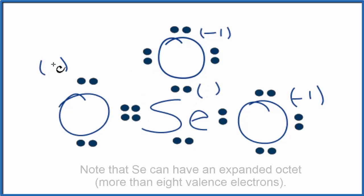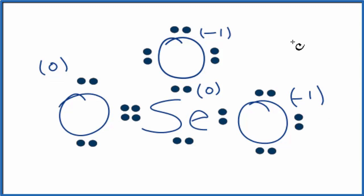And now we'd have a zero formal charge for this oxygen and for that central Se there. These are still both negative one, but we need to have them as negative one. So that adds up to this charge on the ion. So this is the most favorable Lewis structure or the best Lewis structure for SeO3 2-.